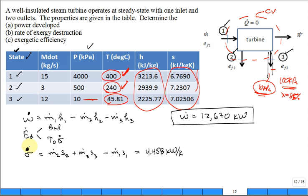Sure. Then we multiply by T naught. T naught, they didn't give it, any T naught was given, right? So what do you assume? 25 degrees C, 298 K. And then you can calculate using this equation, the exergy destruction rate to be 1,328 kilowatts.